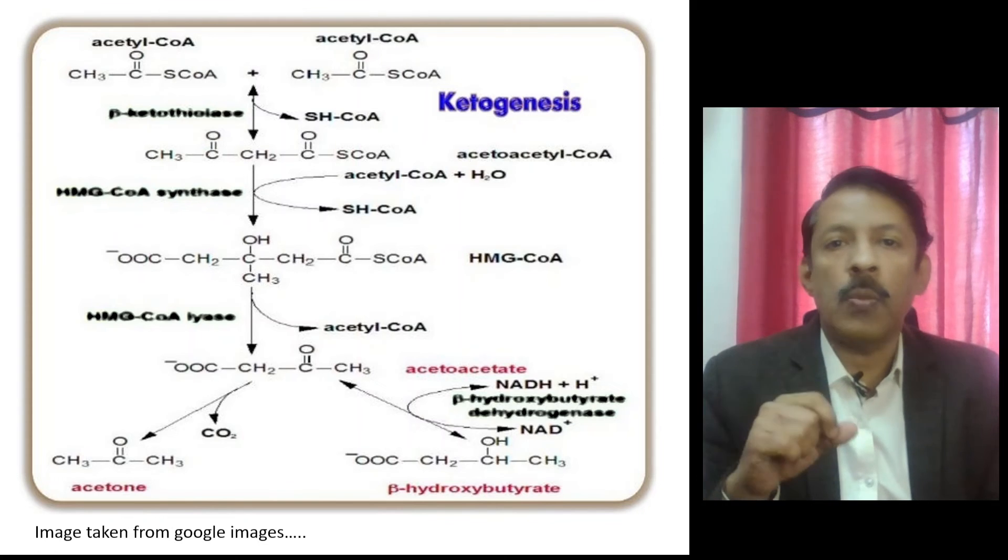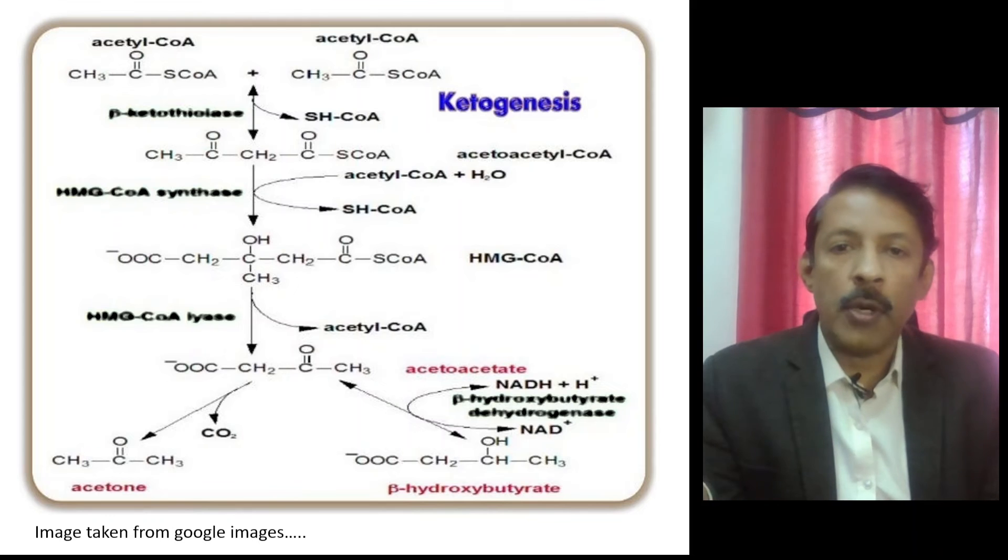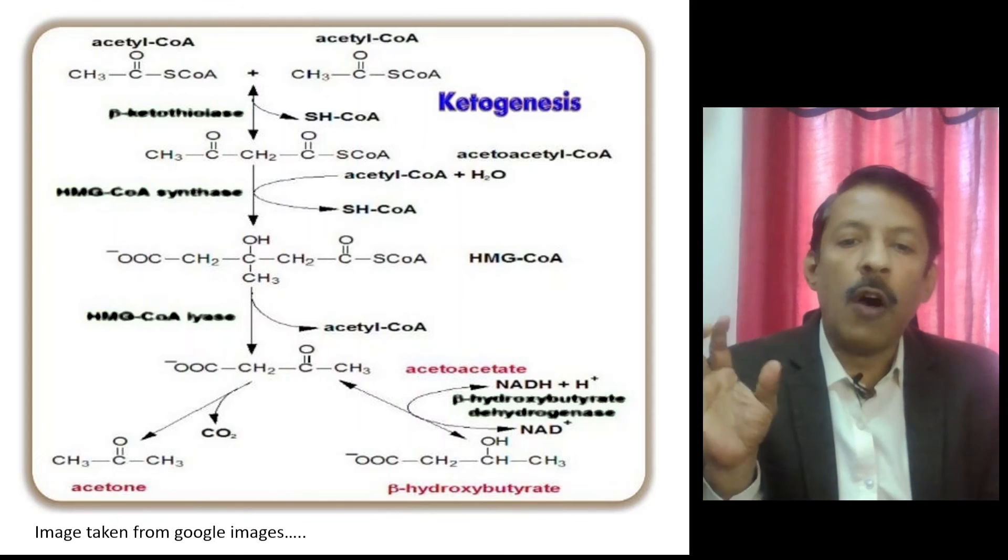Acetoacetate is the first ketone body. This acetoacetate has two pathways: it can either form beta hydroxybutyrate, which is the major pathway, or it can get spontaneously decarboxylated to produce acetone. The three ketone bodies are acetone, acetoacetate, and beta hydroxybutyrate, of which beta hydroxybutyrate is the most abundant.